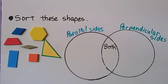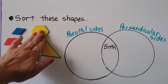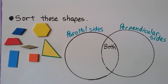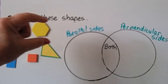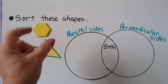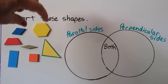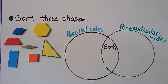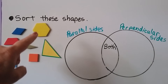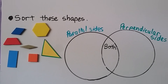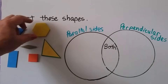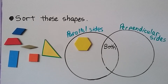Let's take a look at this hexagon. Does it have parallel sides? These sides right here are parallel, and these are parallel, and even these are parallel. So it has parallel sides. Does it have perpendicular sides — do any of the sides make right angles? No, I just see parallel sides. So it's going to go in the parallel circle.